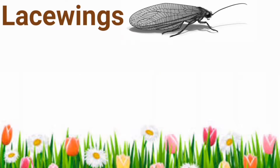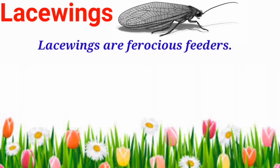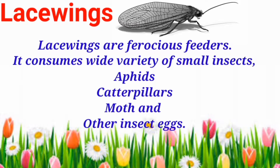Then the next one is lacewings. Lacewings are ferocious feeders. They consume a wide variety of small insects like aphids, caterpillars, moths and other insect eggs.